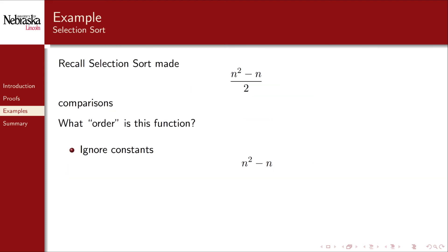As another example, recall selection sort made n squared minus n over two comparisons. Given this function, how might we characterize it? First, we ignore constants, removing the two in the denominator. Then we ignore lower order terms and we're left with a simple quadratic function. This gives us a good estimate intuition as to how we should be analyzing this.